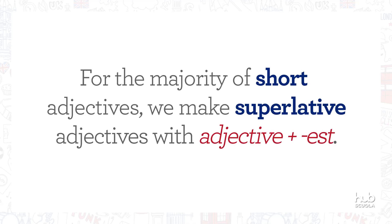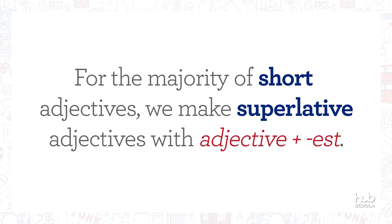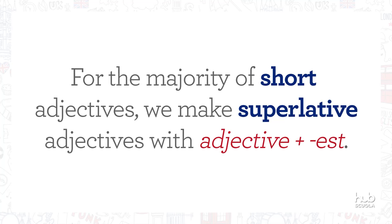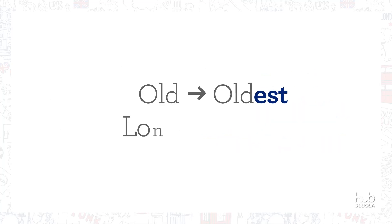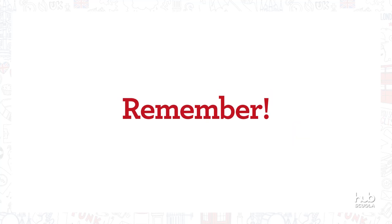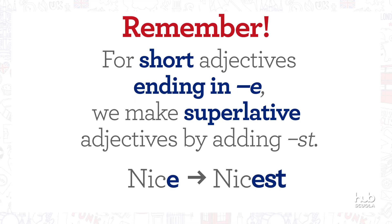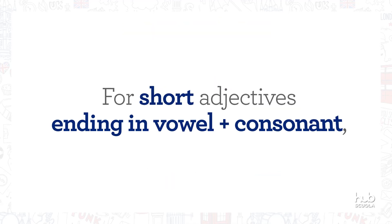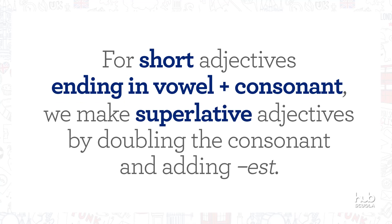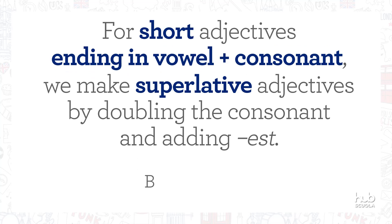For the majority of short adjectives, we make superlative adjectives with adjective plus -EST. Old, oldest. Long, longest. Remember, for short adjectives ending in E, we make superlative adjectives by adding ST. Nice, nicest. For short adjectives ending in vowel plus consonant, we make superlative adjectives by doubling the consonant and adding -EST. Big, biggest.